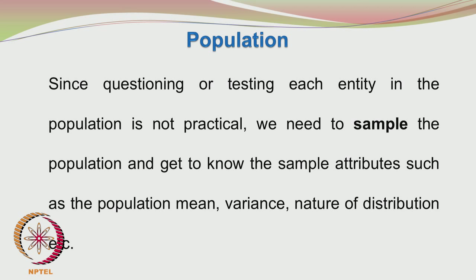A population is a very large entity, and trying to understand the properties of the entire population is a Herculean task. So we need to take a sample out of the population so that we can infer the population's characteristics by knowing the values of the sample. From the sample's attributes like the sample mean and the sample variance, we try to get an estimate of the population mean and variance.